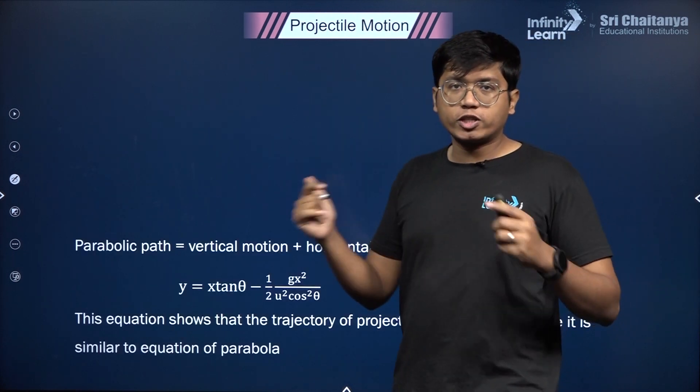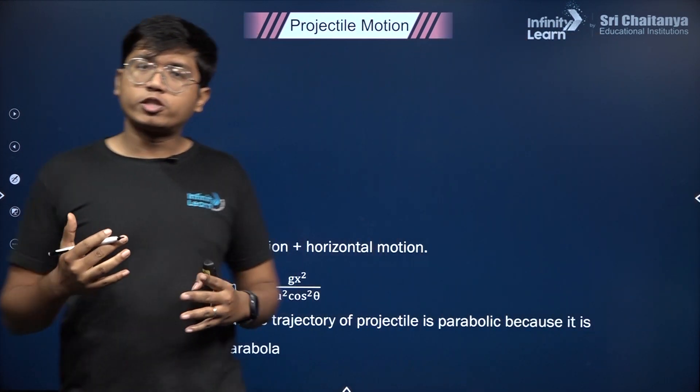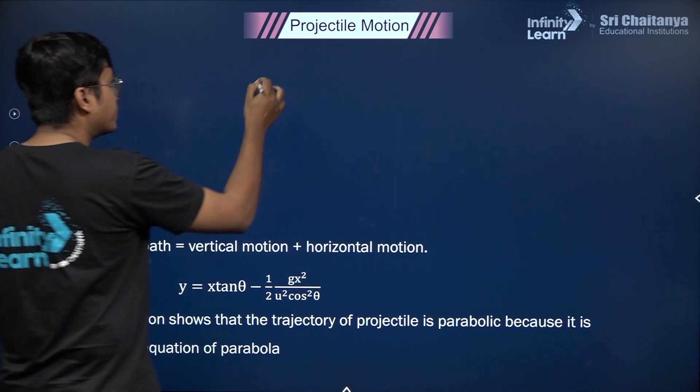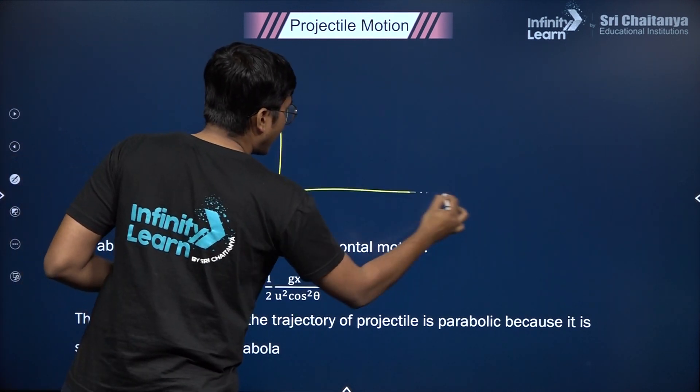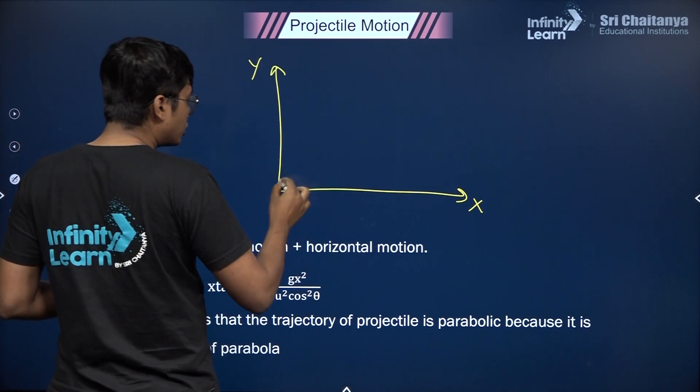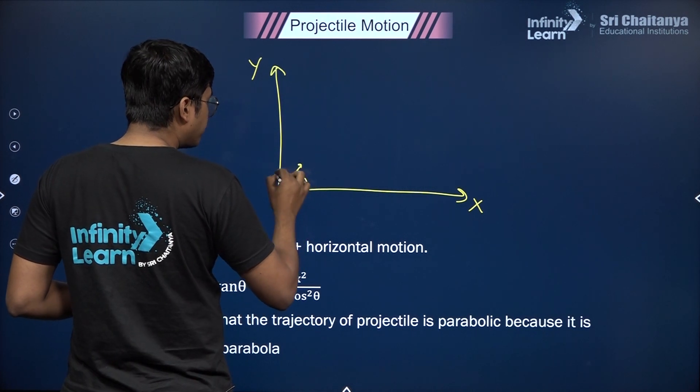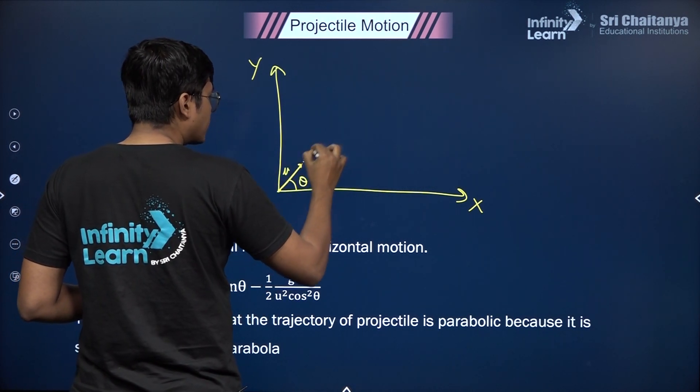First up, what is the equation of trajectory of a projectile? We know that the projectile's motion is a parabolic path, which means if we have the x and the y axis, a projectile that is launched at an angle theta with a launch speed u is going to trace out a parabolic path.